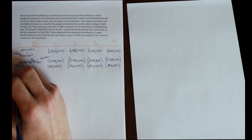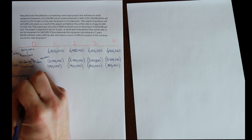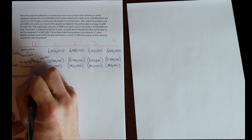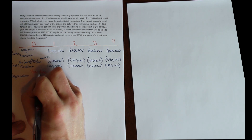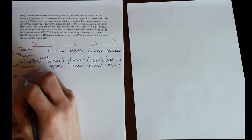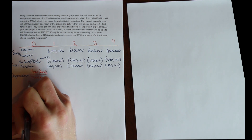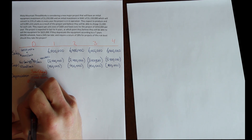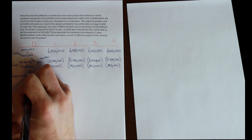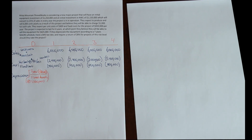Finally, we have depreciation. Sales minus costs minus depreciation gives us EBIT. We depreciate this asset on a seven-year MACRS schedule. What we depreciate is our fixed asset purchase of $1.25 million. Now, we have a seven-year MACRS class but only four years of project life, so by definition we will not fully depreciate the asset — there will be some book value remaining.